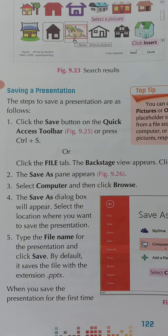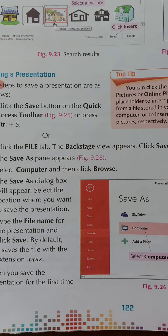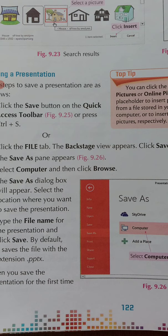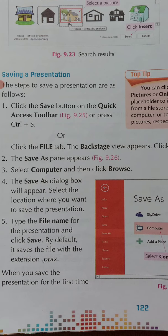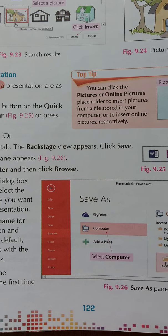Or click the file tab — the backstage view appears — then click Save. There is another way: you can go to the topmost menu bar, click the file tab with your mouse, and then you will find the backstage view appears with a Save option. You can click it.